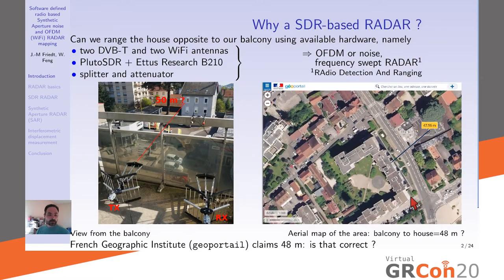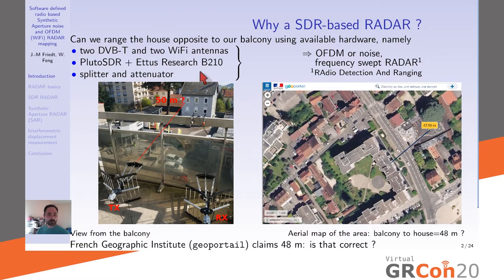During lockdown, stuck at home and wondering how far the house opposite the balcony was, the goal was to build a radar system to measure this range. The French Geographic Institute's aerial map says it's about 50 meters away. The aim is to use readily available hardware — DVB-T antennas, Wi-Fi antennas, a PlutoSDR, a USRP B210, and various passive RF components — to fabricate a short-range radar system able to map targets at around 50 meters distance.